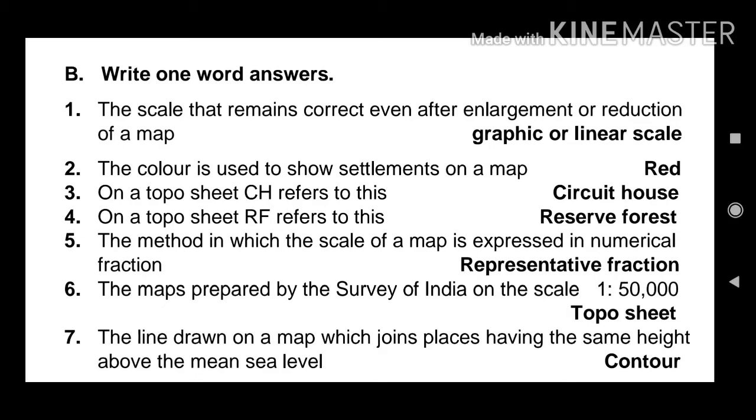The colour is used to show settlements on a map. Red. On a topo sheet, CH refers to this. Circuit house. On a topo sheet, RF refers to this. Reserve forest.